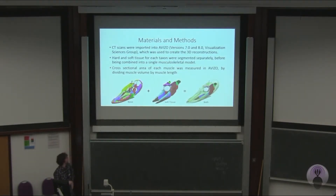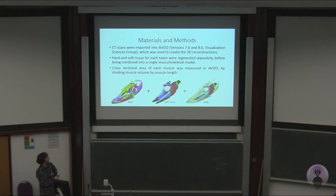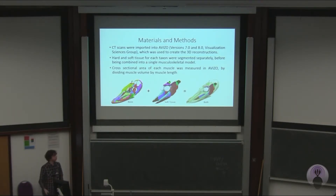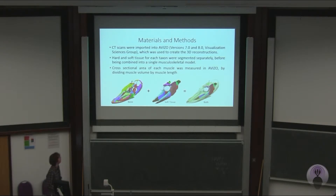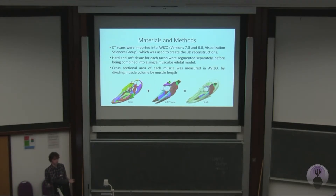Then we imported these data sets into Viso, which is a 3D reconstruction package, and used that to make 3D reconstructions. We segmented individual bones and individual muscles separately, then put the two together to make a musculoskeletal model, which served as the basis for all the anatomical descriptions. To make these descriptions quantitative rather than qualitative, we got numbers out of these reconstructions and measured the cross-sectional areas of the muscles in Viso using standard volume over length to get a cross-sectional area.